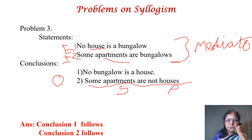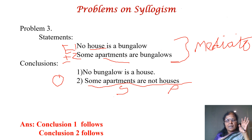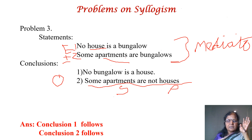Find the type: 'no house is a bungalow' is E type, and 'some apartments are bungalows' is particular positive — I type. The conclusion 'some apartments are not houses' is particular negative — O type. Look into the mediate inference table: E plus I gives O star. Star means the subject and predicate are interchanged. Since the arrangement is interchanged, this is O star — which is valid. So conclusion 2 follows.